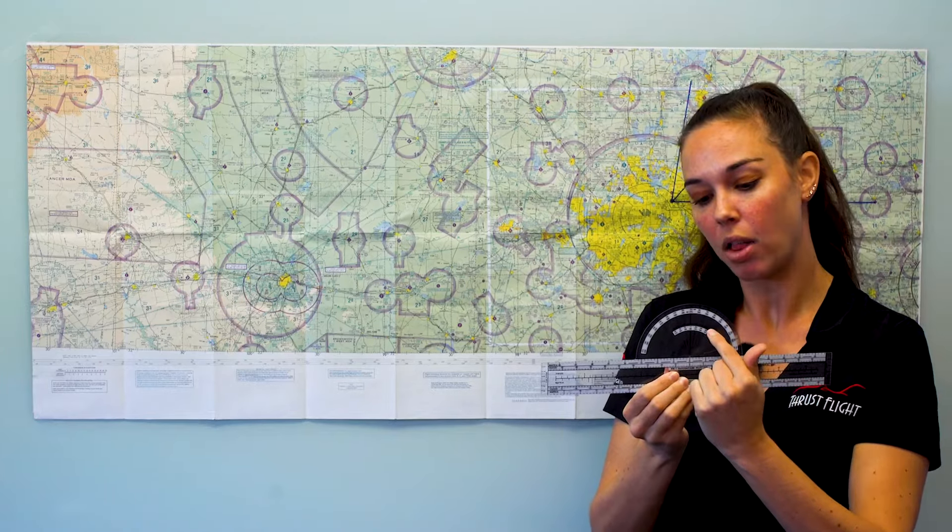So be really careful with that. I'm going to use this top outer scale when I'm using lines of longitude and this small inner scale if I use a line of latitude. And that's how to use a plotter.